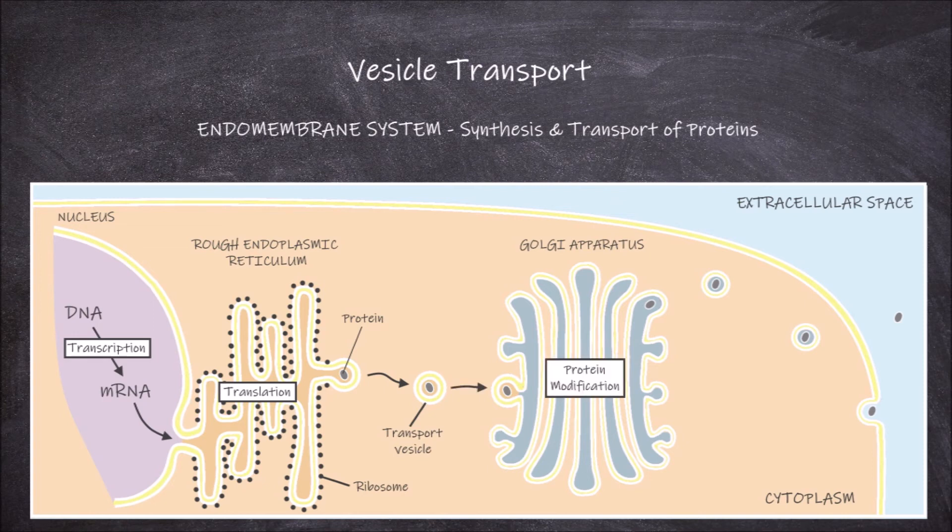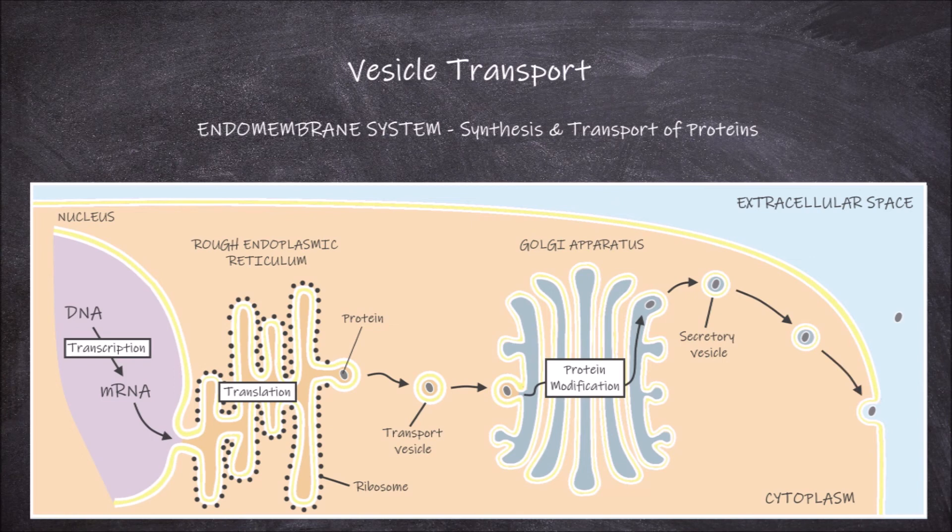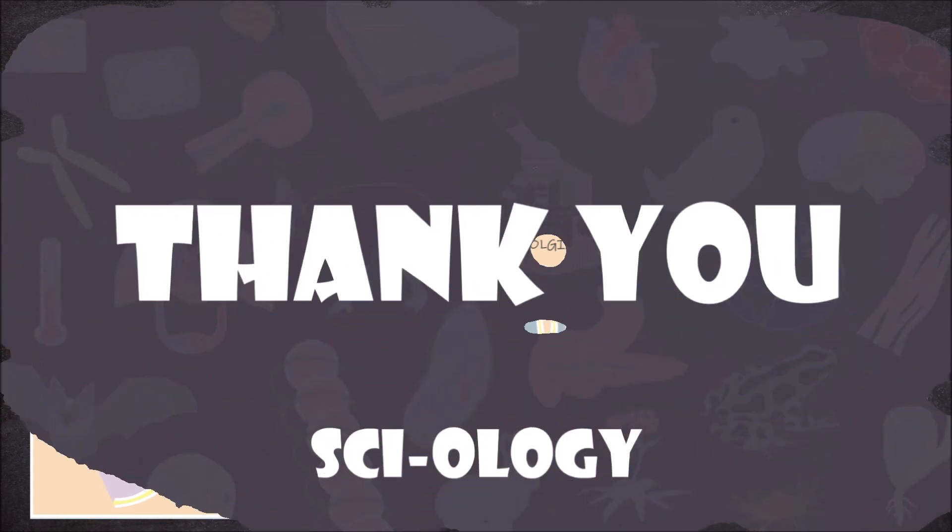Modification of the proteins occurs within the Golgi apparatus, then it is packaged up again, this time into a secretory vesicle. This secretory vesicle transports the protein to the cell membrane, where it fuses with the cell membrane in a process called exocytosis, releasing the protein from the cell.